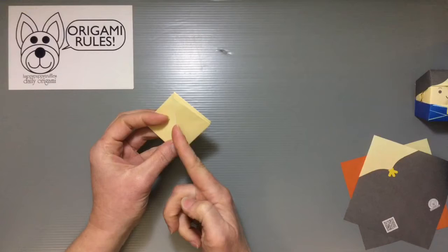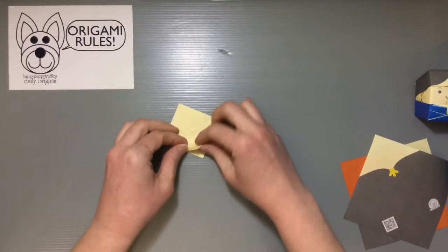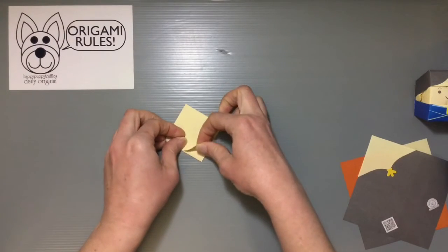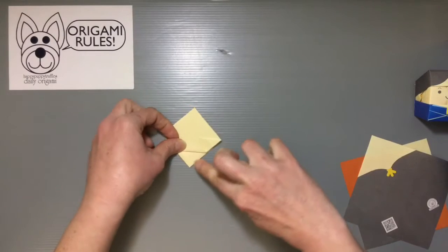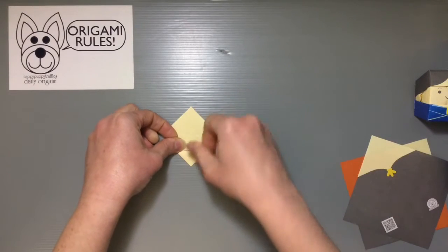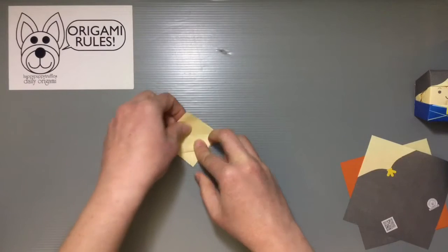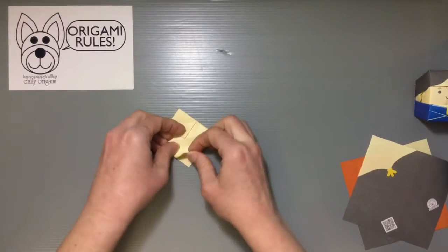Now I'm going to take this tip and fold it towards the center, creating a crease that is parallel with the center line. So you can kind of imagine that there's a line going straight through across here to keep it all straight and lined up. I'm going to do that on all four of these sides.